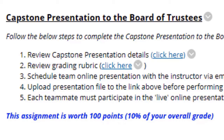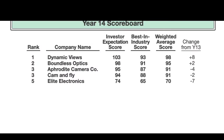Now let's look at the results of year 14 within Globus. For the year 14 scoreboard: in year 13, Company A was in first at 95, Company B second at 93, Company C at 93, Company D at 90, and Company E at 77. In year 14, Company D leapfrogs to first place at 98, Company B at 95, Company A at 91, Company C at 91, and Company E at 70. Company E, you're clearly not trying within the simulation, and that is unacceptable when all other teams are in the 90s.